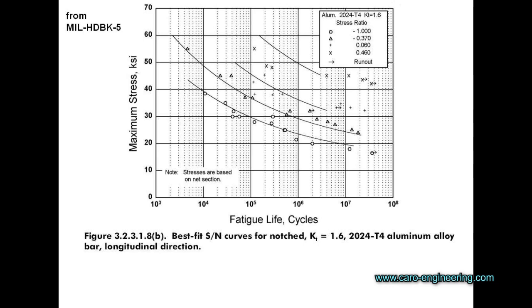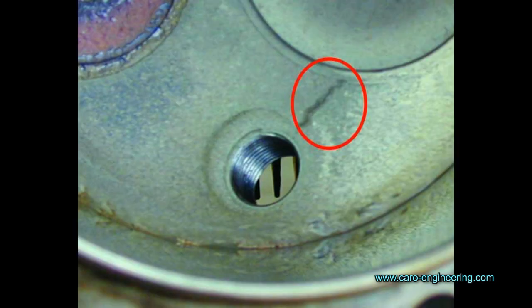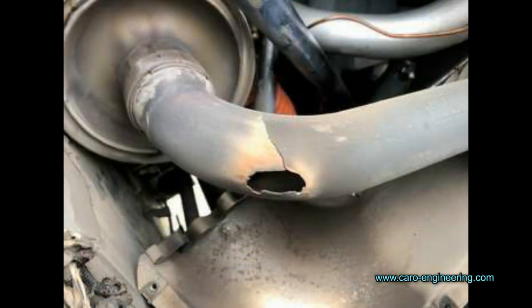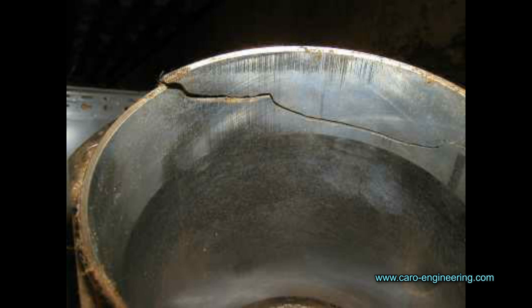Fatigue is not just the result of mechanical load cycles. Thermal load cycles can also cause fatigue damage in metals, for example in aircraft engines. Air-cooled engines go through large temperature changes, in addition to vibration, during which the material expands and contracts and fatigue damage accumulates. The crankcase, cylinders, cylinder heads, and exhaust pipes are at risk. Once a crack shows up in a case, for example, it is an indication that it is near the end of its fatigue life. Even if the crack can be repaired, the rest of the material is probably not far behind and cracks may soon develop in other places. It is therefore best to replace the damaged part with a new one.